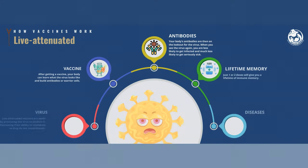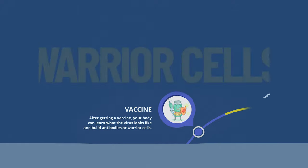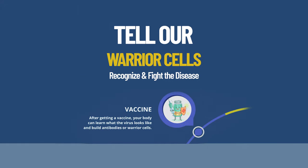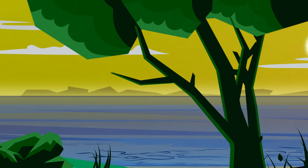We all have antibodies or immune warrior cells that stand guard and attack diseases. When we get a vaccine, the ingredients in the shot tell our warrior cells how to recognize and fight the disease. Imagine I am the immune system on a bright sunny day. Before getting a vaccine, I'm not able to see the virus. But after getting a vaccine, I'm able to see the virus.